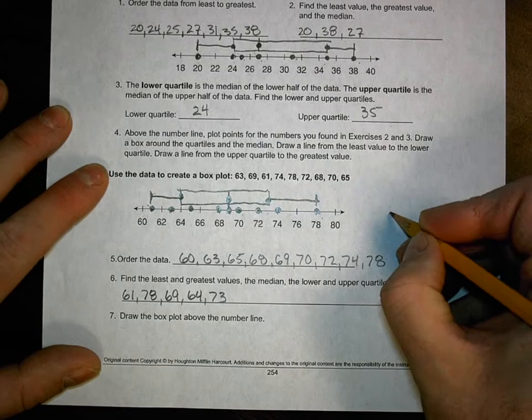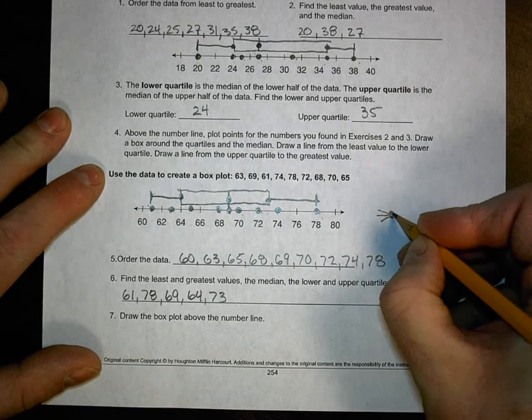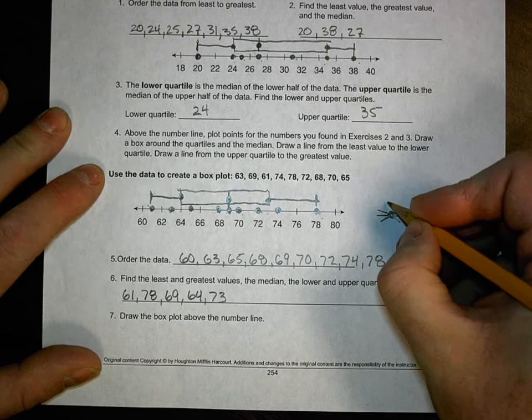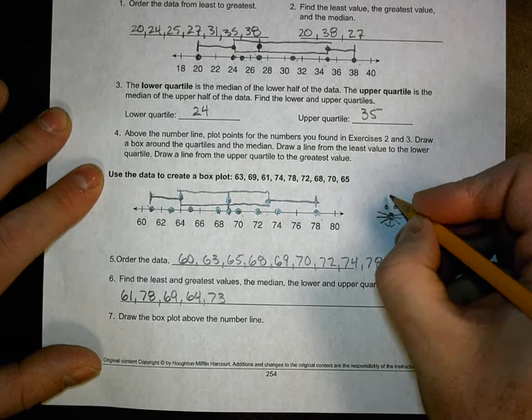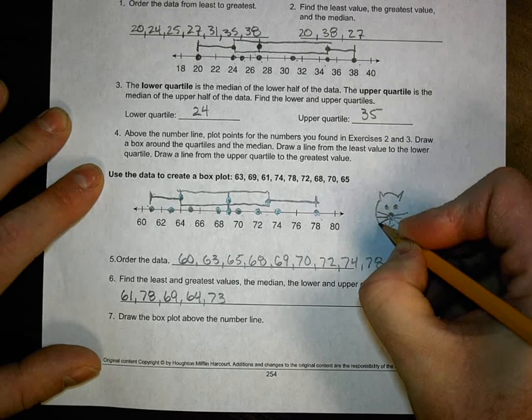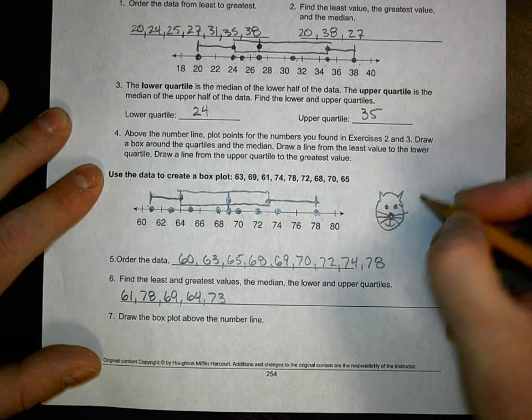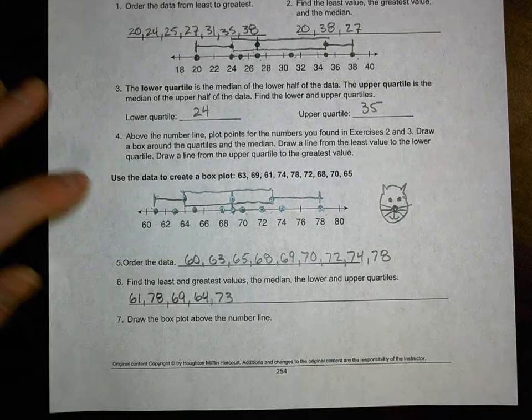So since we've been talking about whiskers and boxes, let's make a kitty. Yay, this is my attempt at a kitty. Don't be hating. Gotta give it some pointy ears. Little head. Yay, my kitty is done. All right, so I hope you enjoy drawing a kitty too. Bye.